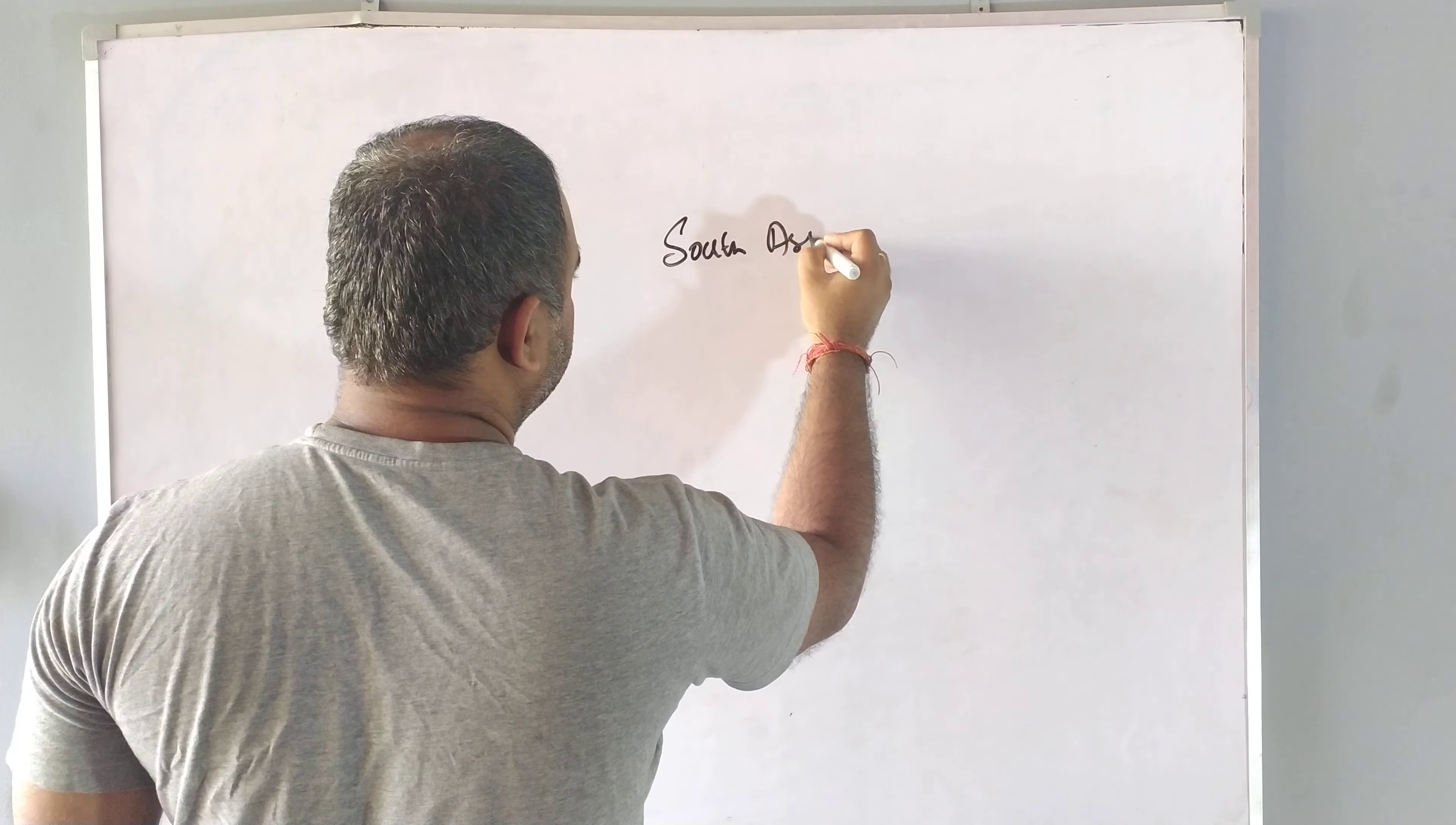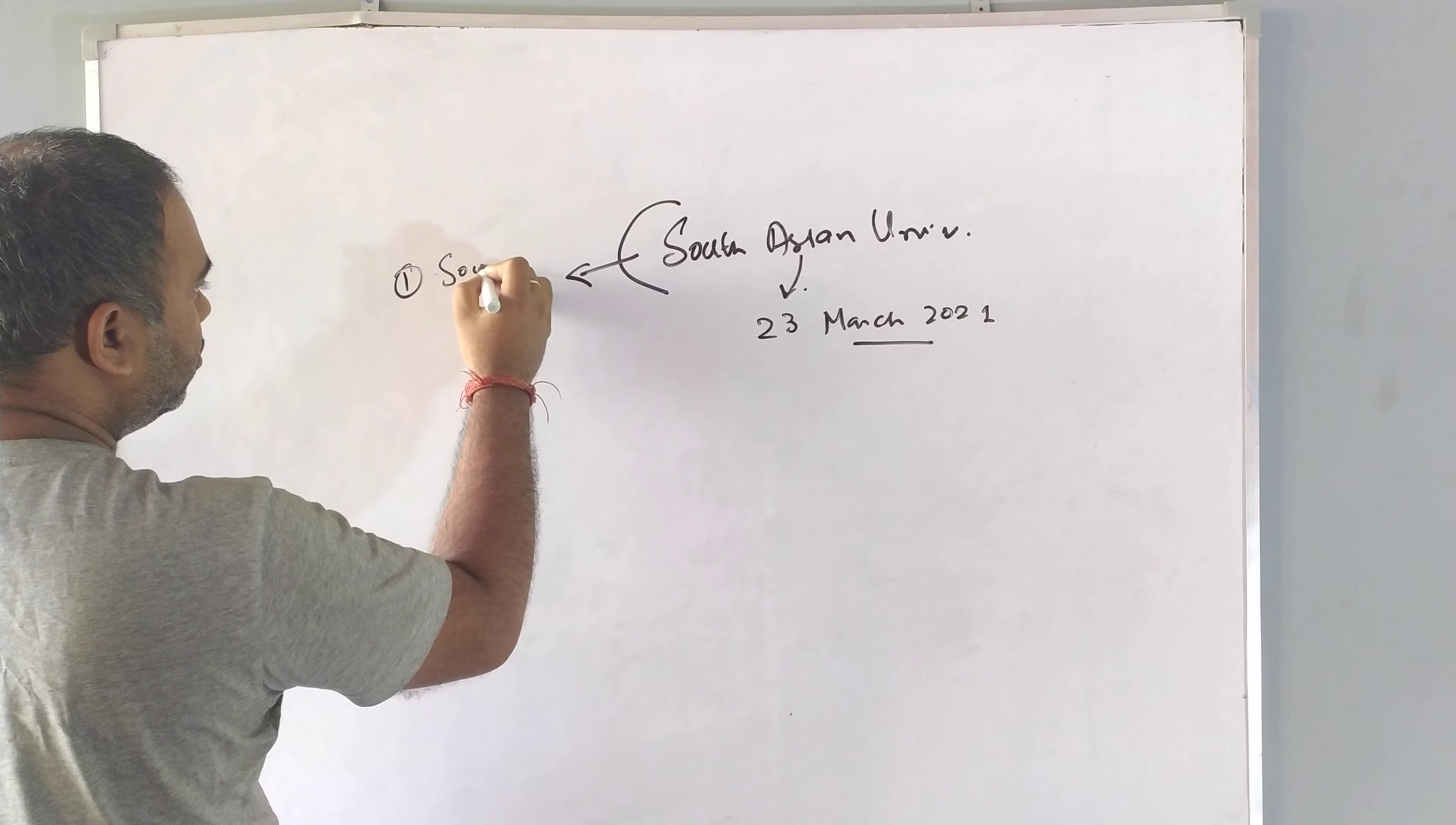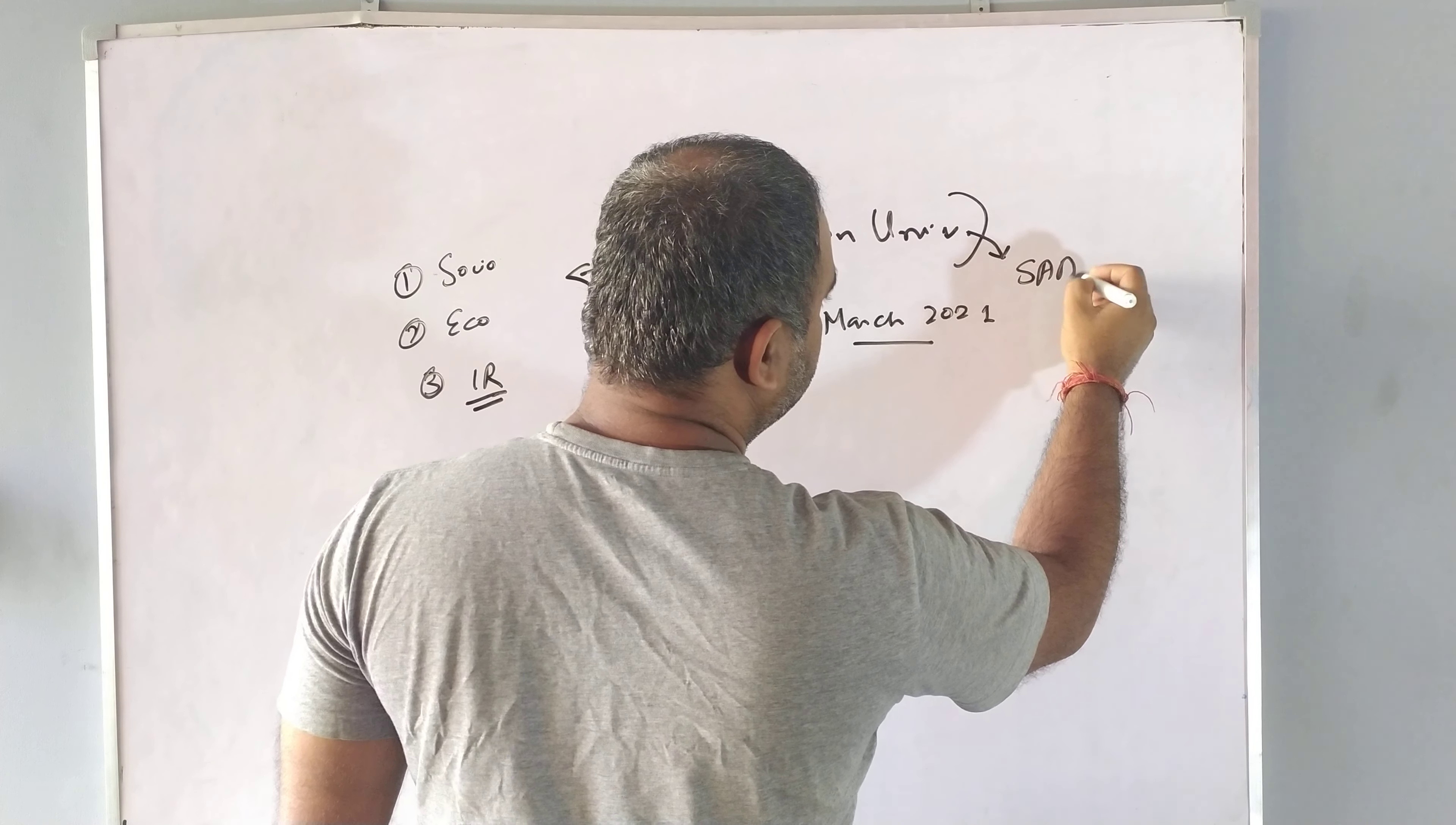You can fill up the form. In terms of courses, there are three major programs that you can apply, especially for the social science background. First is Sociology, second is Economics, third is IR. If you don't know about South Asian University - this is a SARK university located in New Delhi, and in this university 50% of the seats are reserved for Indians.